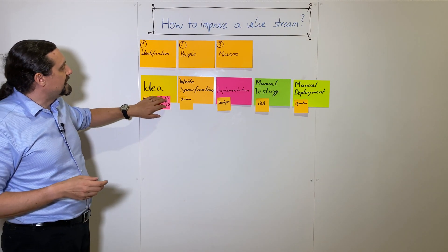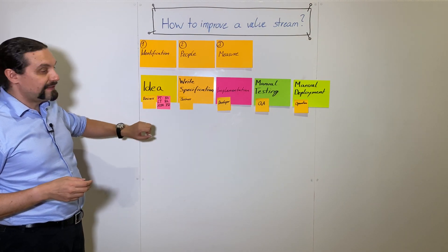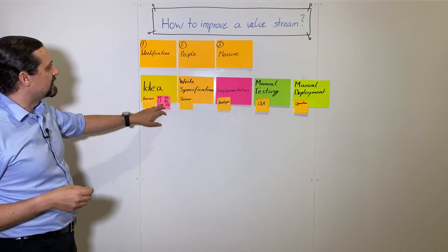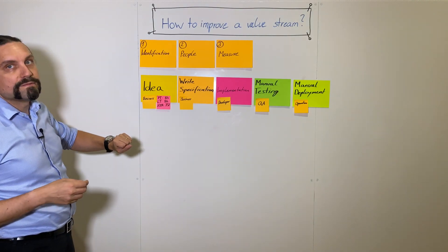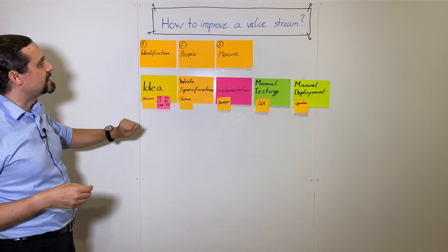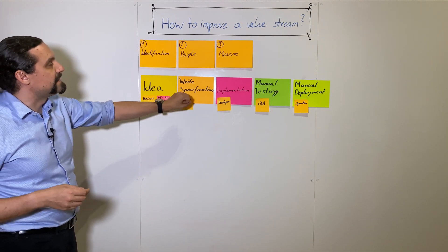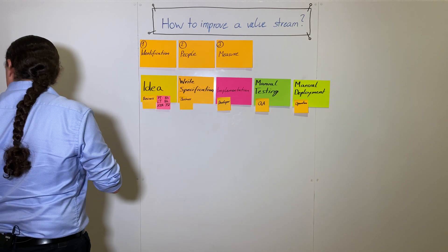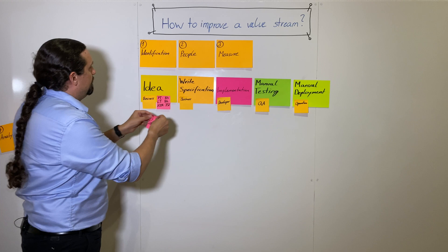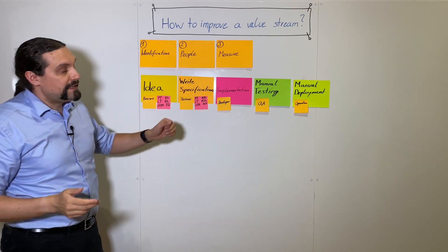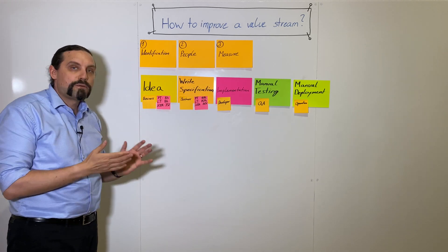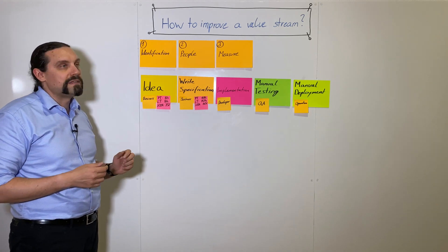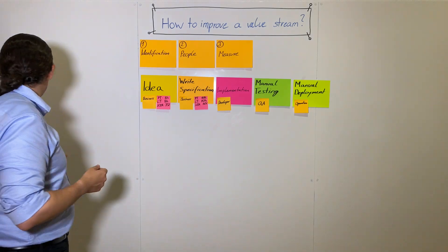For the idea step we have a process time of eight hours, lead time of eight hours, and roughly a percentage completed and accuracy of 75 percent — which means in 75 percent everything was okay, but in 25 percent it was not. For writing the specification we have a process time of 40 hours, a lead time of 80 hours, and percentage completed and accurate of 50 percent.